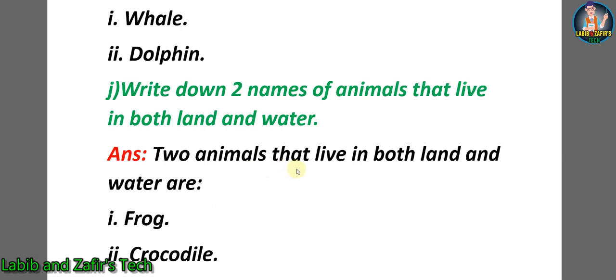Write down two names of animals that live in both land and water. Answer: number one — frog; number two — crocodile.